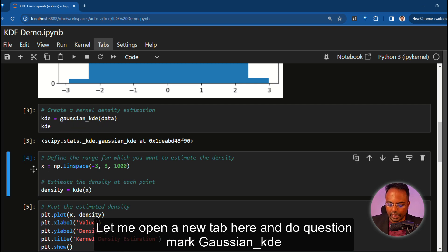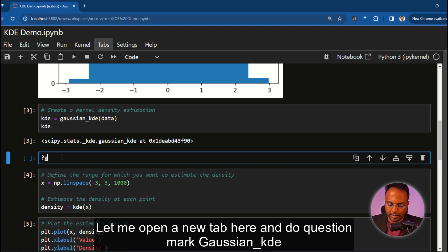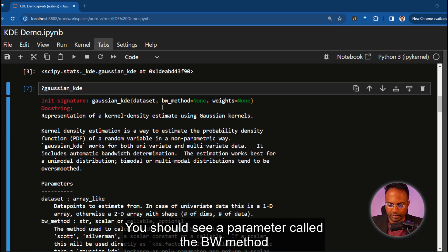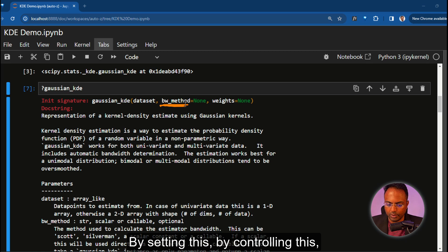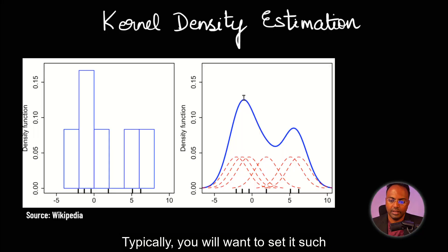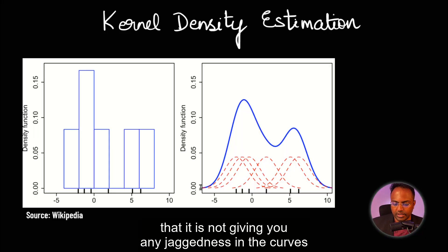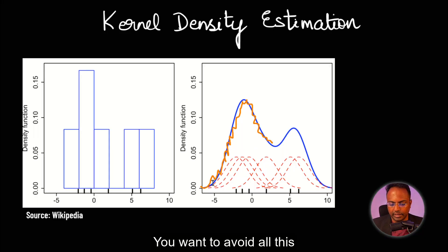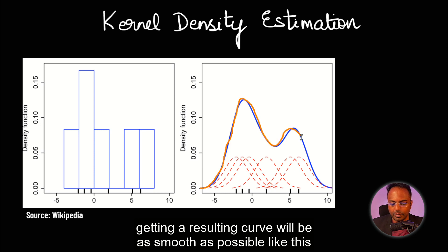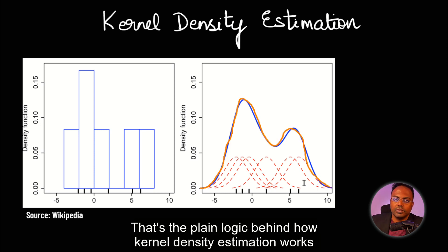Let me open a new tab here and do question mark Gaussian underscore KDE — you should see a parameter called BW method. By setting and controlling this, you will be able to control what should be the width of each of those Gaussian kernels. Typically, you will want to set it such that it is not giving you any jaggedness in the curves. You want to make it smooth so that all the jaggedness will go off, and the resulting curve will be as smooth as possible like this. That's the plain logic behind how kernel density estimation works.